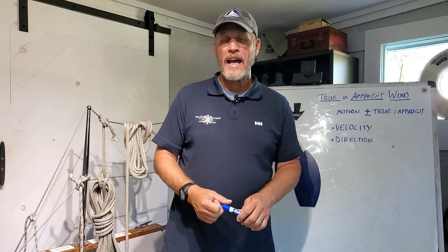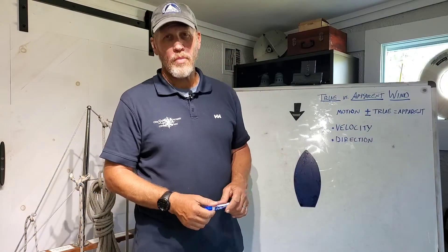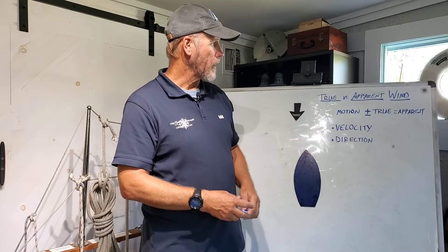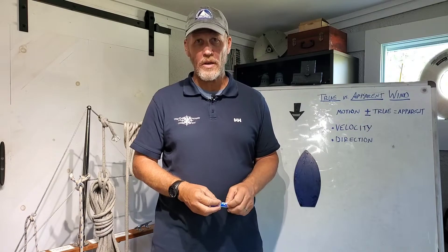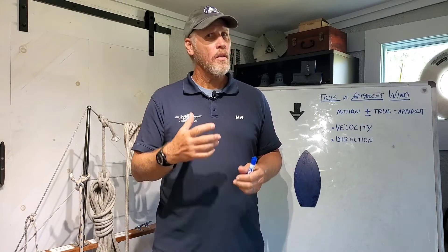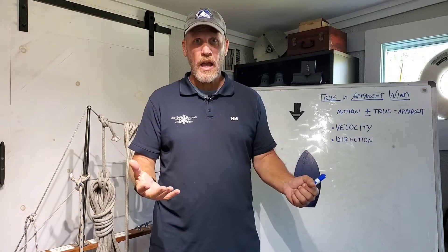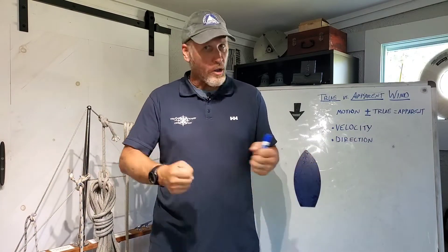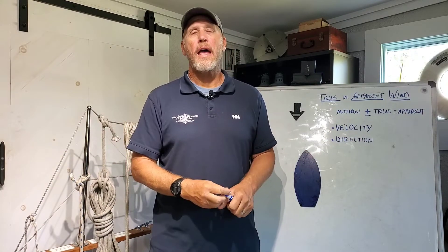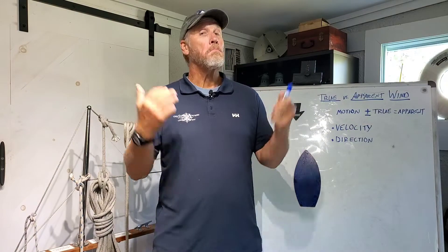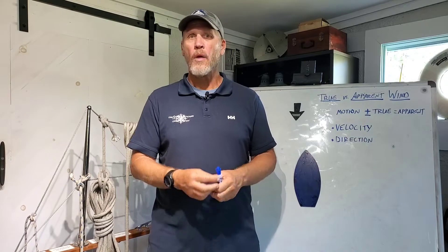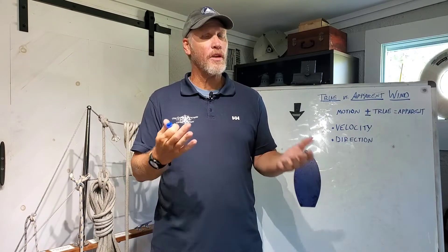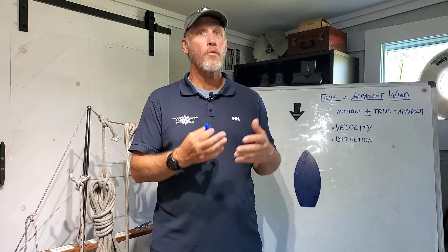Let's head into the classroom. As we think about true versus apparent wind, look at this: motion plus or minus true wind equals apparent. Motion bends or changes the true wind to give you apparent wind. Think about it this way — if you're on your bicycle and there's absolutely no wind outside, you start riding at about 10 miles an hour, what are you going to feel? 10 miles an hour of breeze. Motion has created apparent wind.